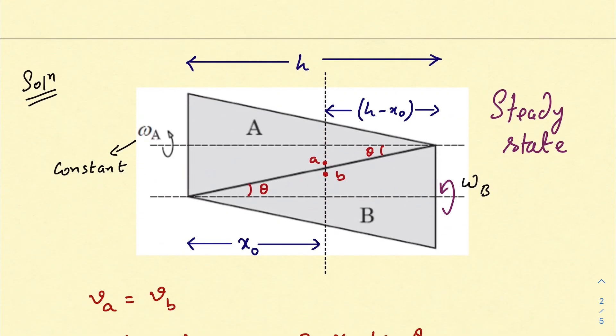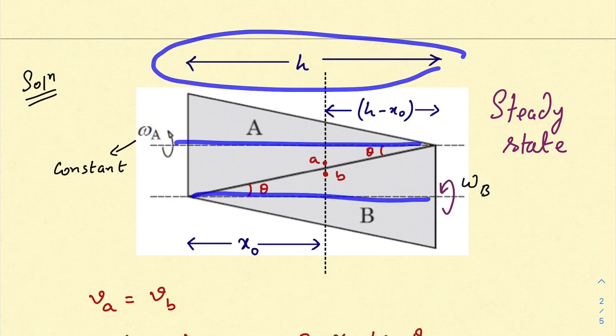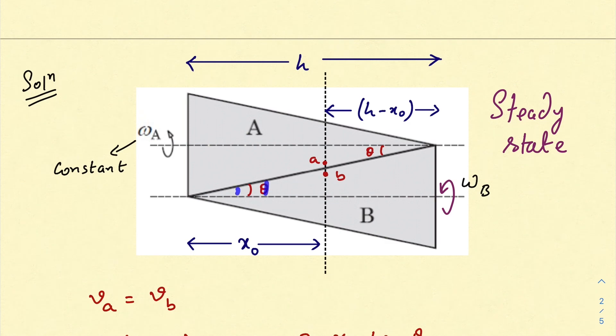As you can see in the given diagram, I have drawn the steady state when cone B finally acquires the constant angular velocity ω_B in this orientation. First things first, I have considered h as the height of each cone, or length of each cone. And as you can see, the radius of cone B is increasing as we go towards right, and the radius of A is decreasing as we go towards right.